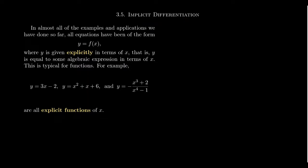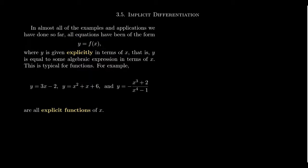Before we jump into the deep end of the pool about what implicit differentiation even means, we have to first talk about what does it mean for a function to be expressed explicitly or implicitly. Let me give you some examples to illustrate this point. In almost all of the examples you've seen in this calculus class and in previous mathematics classes, your functional relationships are typically given in the format y equals f of x, where f of x is some algebraic or trigonometric expression. So y all by itself is on the left-hand side. This is what we mean when we say that y is given explicitly in terms of x.